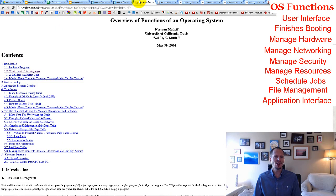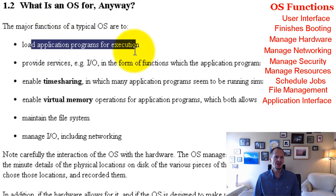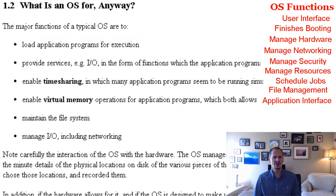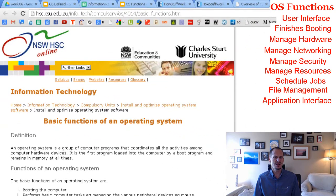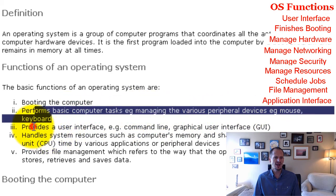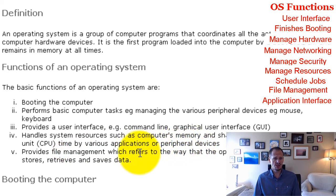I also found an overview of OS functions from the University of California, Davis: load application programs for execution, provide input/output services, enable timesharing, enable virtual memory, maintain the file system, and manage I/O. And from an Australian school: boot the computer, perform basic tasks, manage peripheral devices like mouse and keyboard, provide a user interface, handle system resources like memory sharing with the CPU, and provide file management — which refers to how the OS manipulates, stores, retrieves, and saves data.